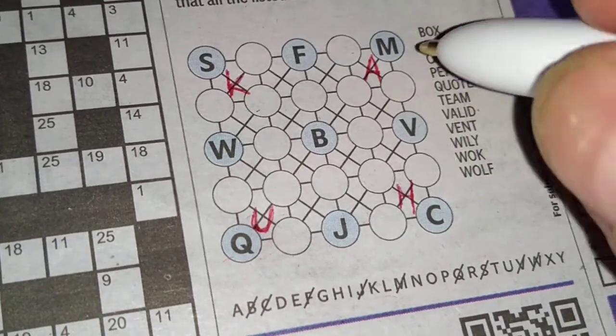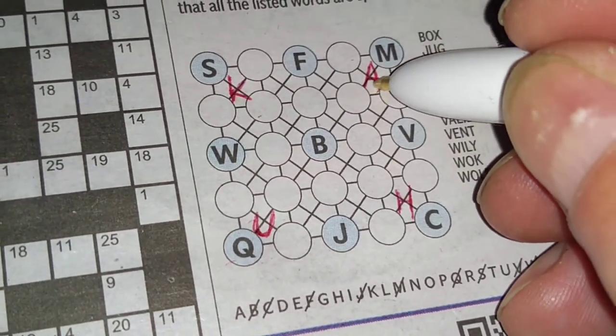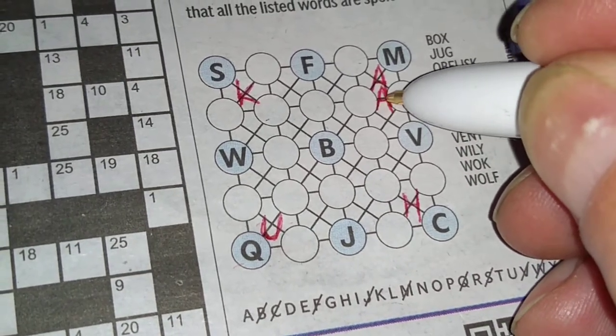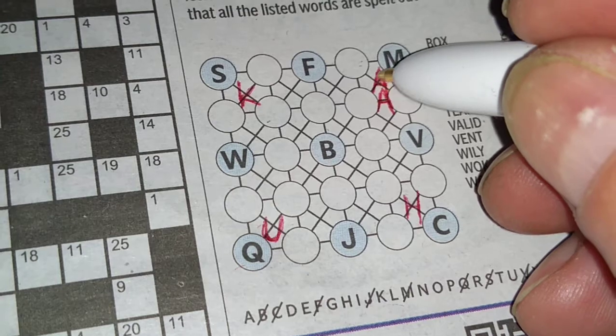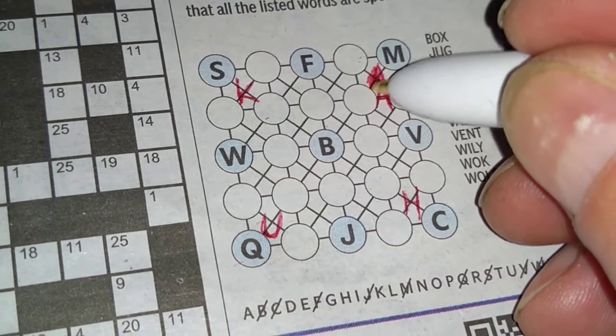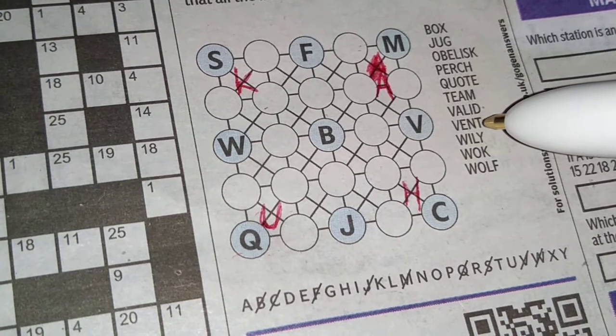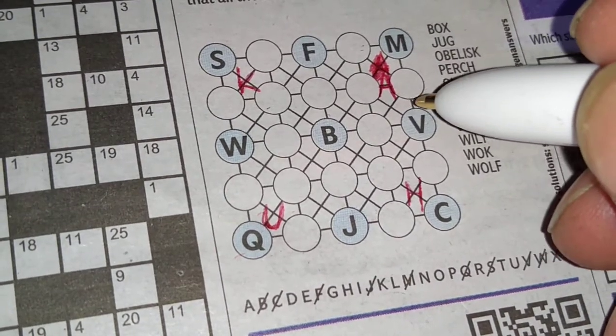Valid. Right, so the A has to be between these two now. Because it can't connect to the V if it's in that one there. So we cross out that. This is why we start in red. Valid.